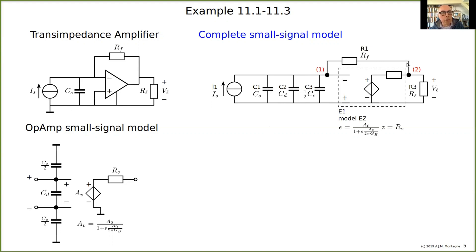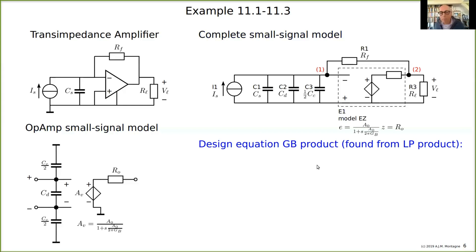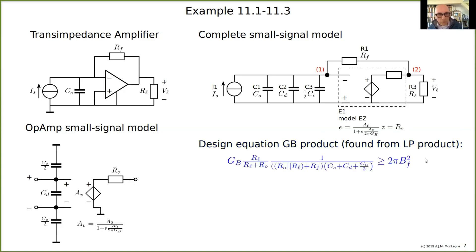We have the feedback resistor, the output resistance, the load, and the transfer of the operational amplifier. The first step we did in the previous lecture is to design the bandwidth — to find the design equation for the gain-bandwidth product of the operational amplifier, because this contributes to the loop gain-pole product of the complete amplifier.